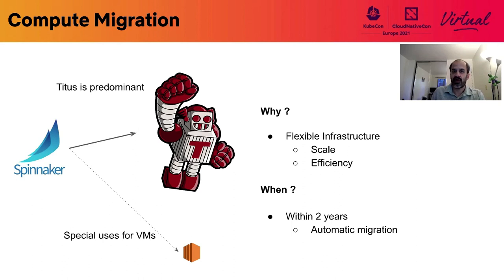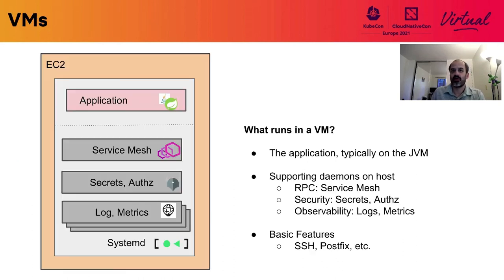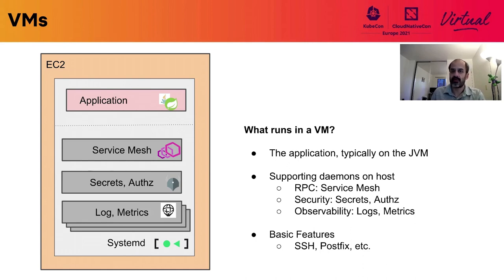Here is what a typical VM runs at Netflix. We have the application typically running in the JVM and a series of daemons providing service discovery, security, and observability, to name a few things. Application developers expect these daemons to just work, and so we run them in an operationally sensitive fashion — we start and shut them down in a specific order, restart them when they fail, and they are generally available to the application.